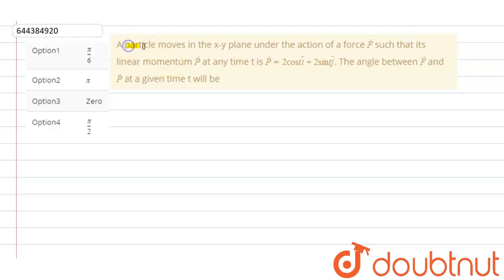Fellow students, so the question is: a particle moves in xy plane under the action of force such that its linear momentum at any time t is P vector equals to 2 cos t i cap plus 2 sin t j cap. The angle between the force and the momentum at any given point of time is.